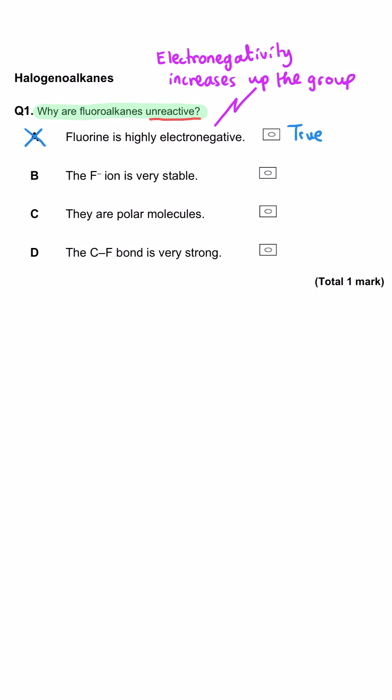Option B: the F⁻ ion is very stable. Definitely not. Ions are more stable the larger they are, and F⁻ is quite a small ion, so it is less stable than Cl⁻, Br⁻, etc.